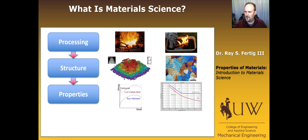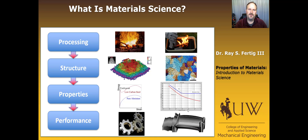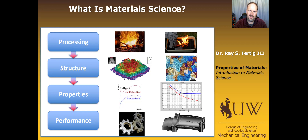I'm also showing a typical fatigue curve with stress on the y-axis and number of cycles on the x-axis, showing differences in materials' fatigue behavior. We can use processing to change the structure and change the fatigue behavior. And finally, once we have the properties we want, we can apply them in an application — like gears or a hot stage blade of a gas turbine engine. So processing affects structure, structure affects properties, and properties affect performance.